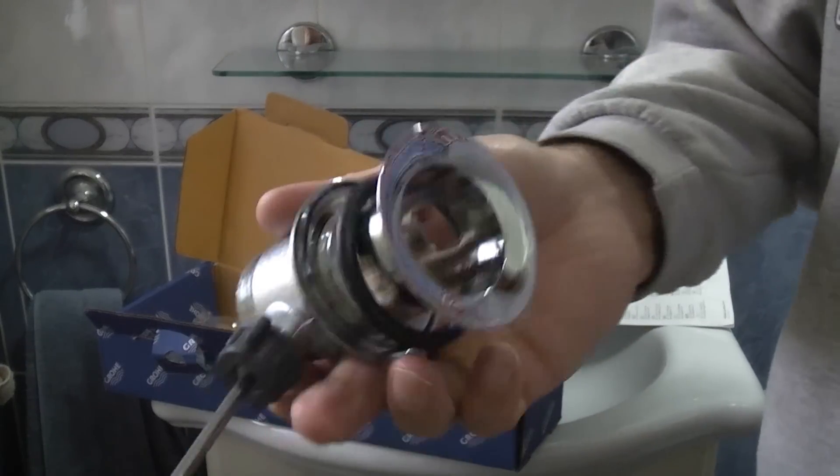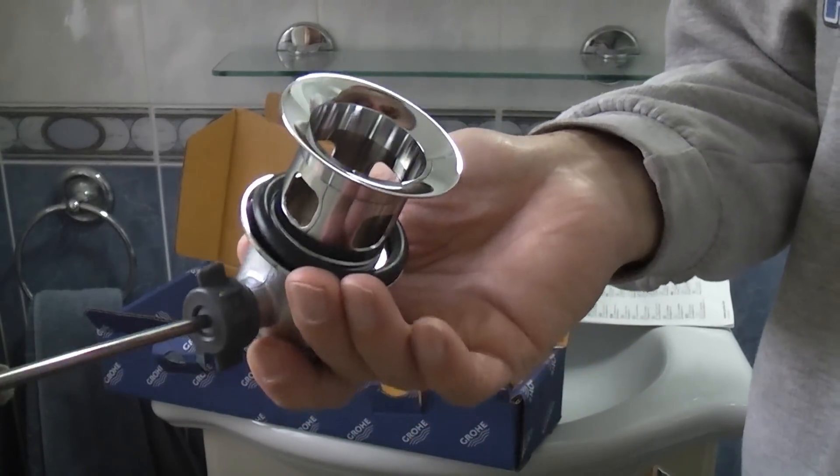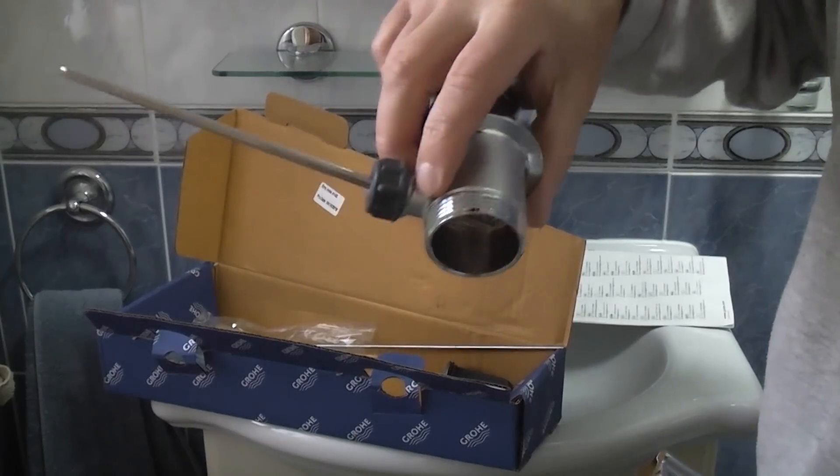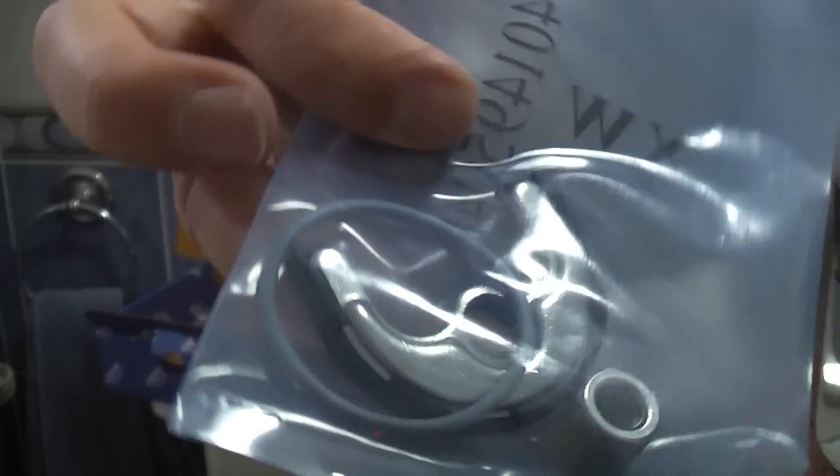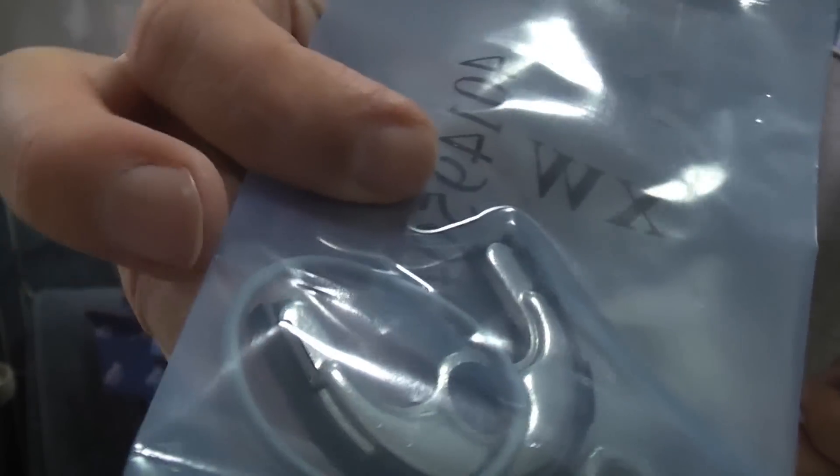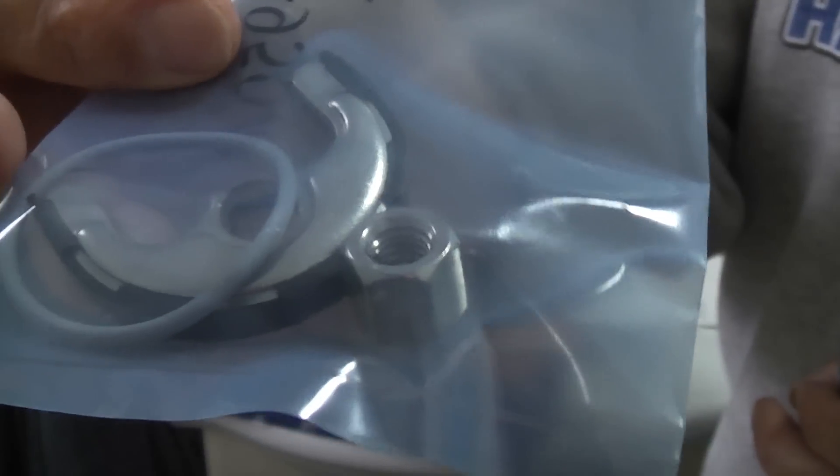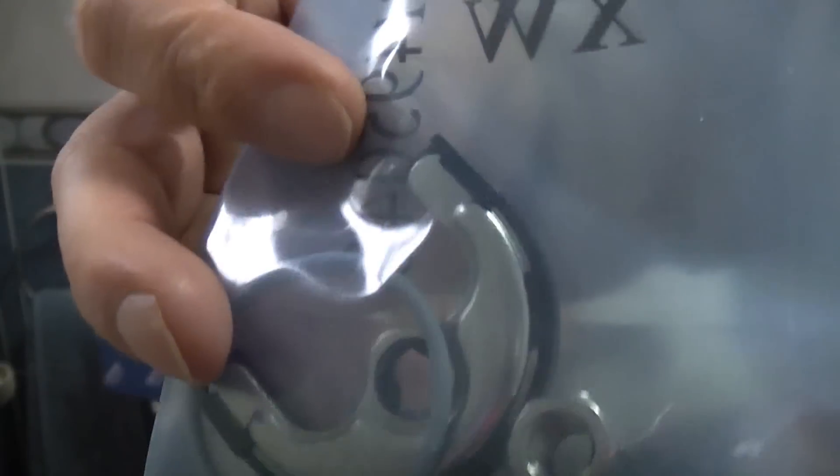The kit also comes with a pop-up waste if you're installing the basin from now. We've already got that installed so we're just replacing the tap in this video. You then get a packet that has the horseshoe washer in it, you have an o-ring and the nut to tighten it in place.